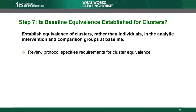First, the study must establish that the clusters in the analytic intervention and comparison groups are equivalent at baseline, but not necessarily using the same individuals as those in the analytic sample. This means that in a study that randomly assigns schools to conditions, equivalence of clusters could be established for the same schools but based on scores of a different group of students in those schools from an earlier year. The review protocol specifies the measures on which equivalence must be satisfied and any special rules for how equivalence must be established.